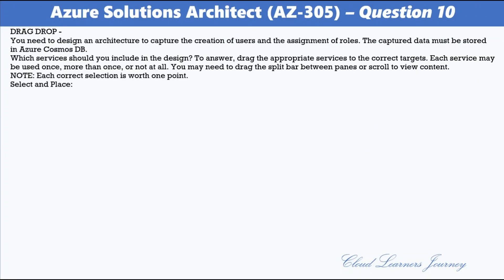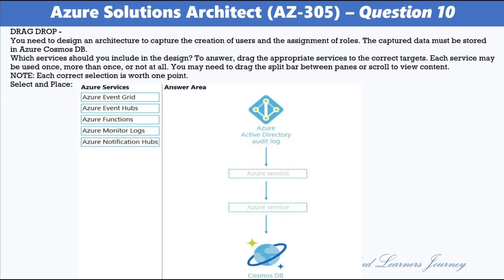Question 10. You need to design an architecture to capture the creation of users and the assignment of roles, with the captured data stored in Azure Cosmos DB. Available Azure services are: Azure Event Grid, Azure Event Hubs, Azure Functions, Azure Monitor Logs, and Azure Notification Hubs. The correct options are Azure Event Hubs — used for streaming Azure Active Directory activity logs to endpoints for long-term retention and data insights — and Azure Functions, which uses the Cosmos DB change feed to store data in Cosmos DB.